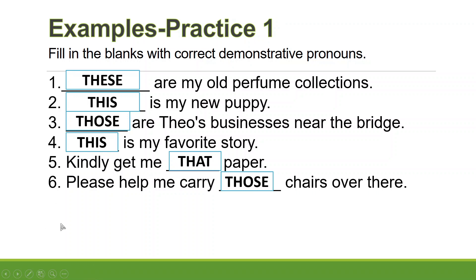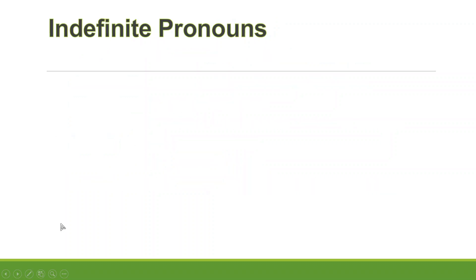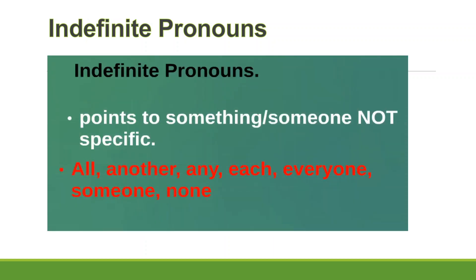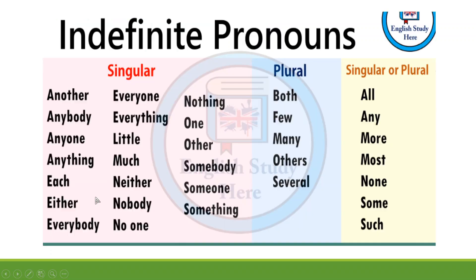Those are examples of demonstrative pronouns used in sentences. Let's go to the second lesson — indefinite pronouns. Indefinite pronouns are used to point to something or someone that is not specific. If you're referring to something or someone not particular, you use indefinite pronouns. Examples include: all, another, any, each, everyone, someone, and none.